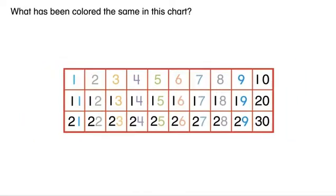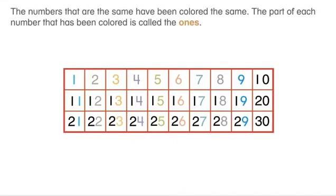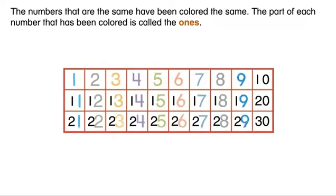What has been colored the same in this chart? The numbers that are the same have been colored the same. The part of each number that has been colored is called the ones.